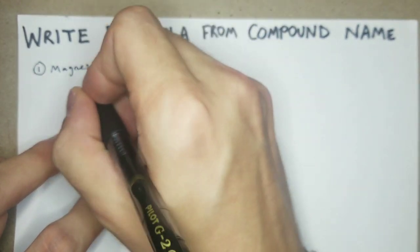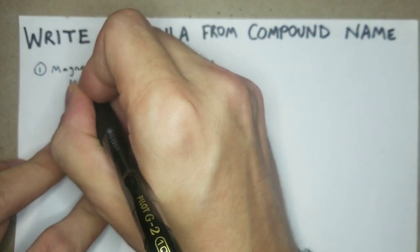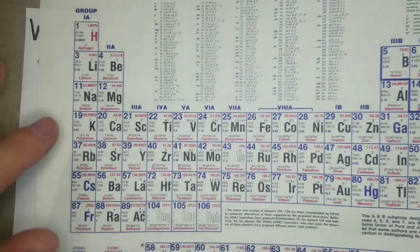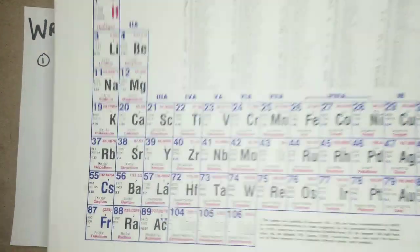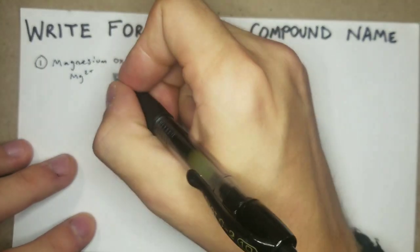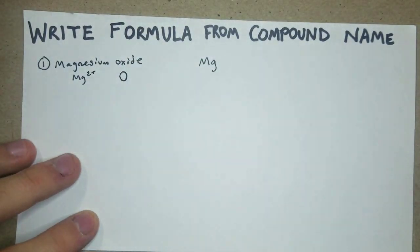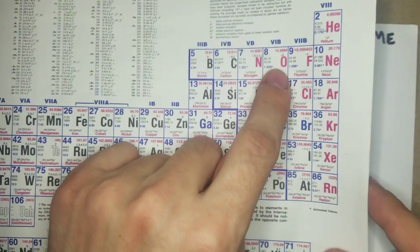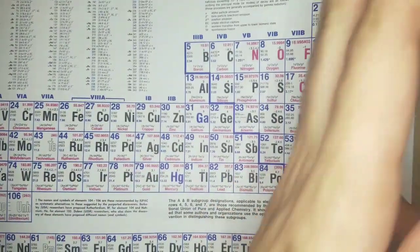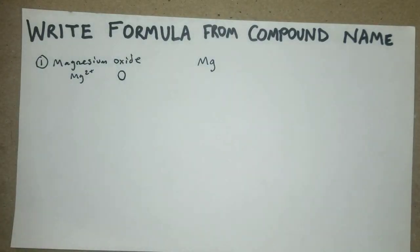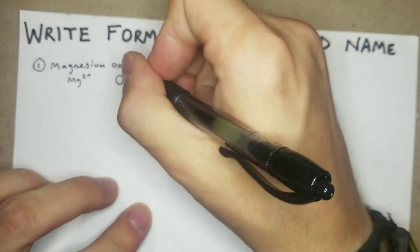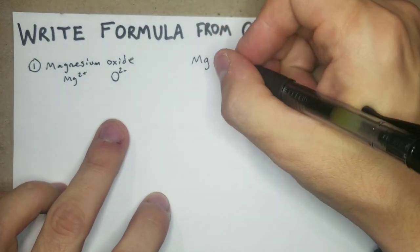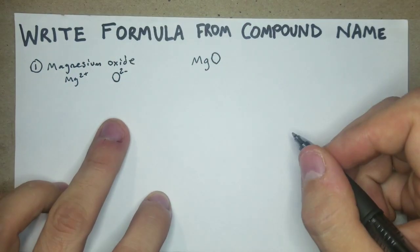We know that Mg is a 2+ charge because we can look at the periodic table and see it's in the second column. Oxygen, being the anion, is 2- because it's in the second-to-last column, not including the noble gases. So there shouldn't be any subscripts — it's just MgO.